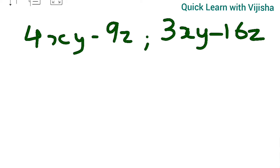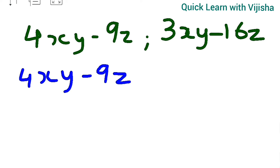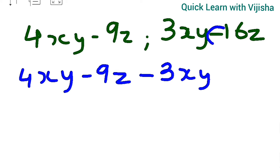The first question is: 4xy minus 9z, and the second is 3xy minus 16z. We have to do subtraction of polynomials. We will write 4xy minus 9z as the first expression, then put a minus sign. In subtraction, unlike addition, the signs will get changed. So minus 3xy becomes plus 8xy — opposite sign is used.